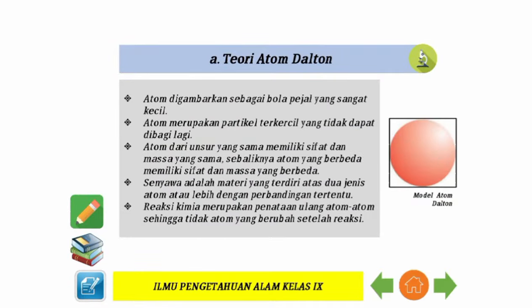Teori atom Dalton: Atom digambarkan sebagai bola pejal yang sangat kecil. Atom merupakan partikel terkecil yang tidak dapat dibagi lagi. Atom dari unsur yang sama memiliki sifat dan massa yang sama; sebaliknya, atom yang berbeda memiliki sifat dan massa yang berbeda. Senyawa adalah materi yang terdiri atas dua jenis atom atau lebih dengan perbandingan tertentu. Reaksi kimia merupakan penataan ulang atom-atom sehingga tidak ada atom yang berubah setelah reaksi.